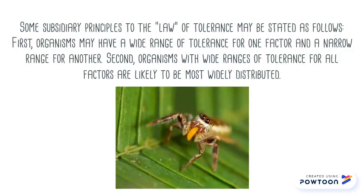Some subsidiary principles to the law of tolerance may be stated as follows. First, an organism may have a wide range of tolerance for one factor and a narrow range for another. Second, organisms with a wide range of tolerance for all factors are likely to be most widely distributed.